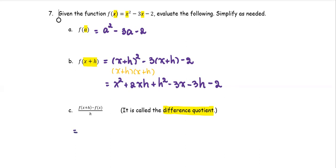The f of x plus h from part b means we have the expression x squared plus 2 times xh plus h squared minus 3x minus 3h minus 2 for the f of x plus h.